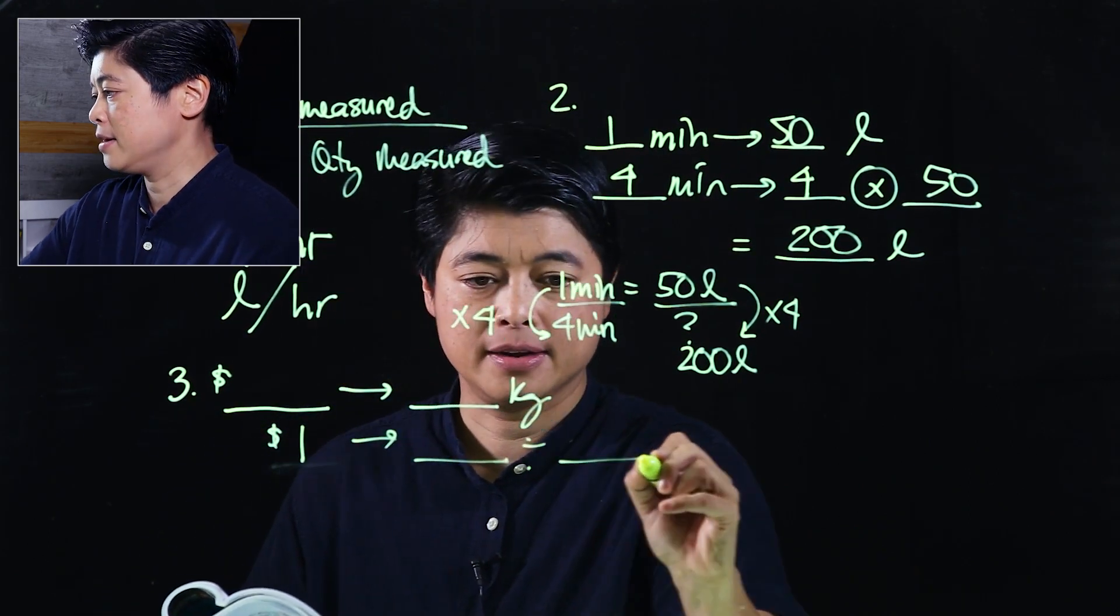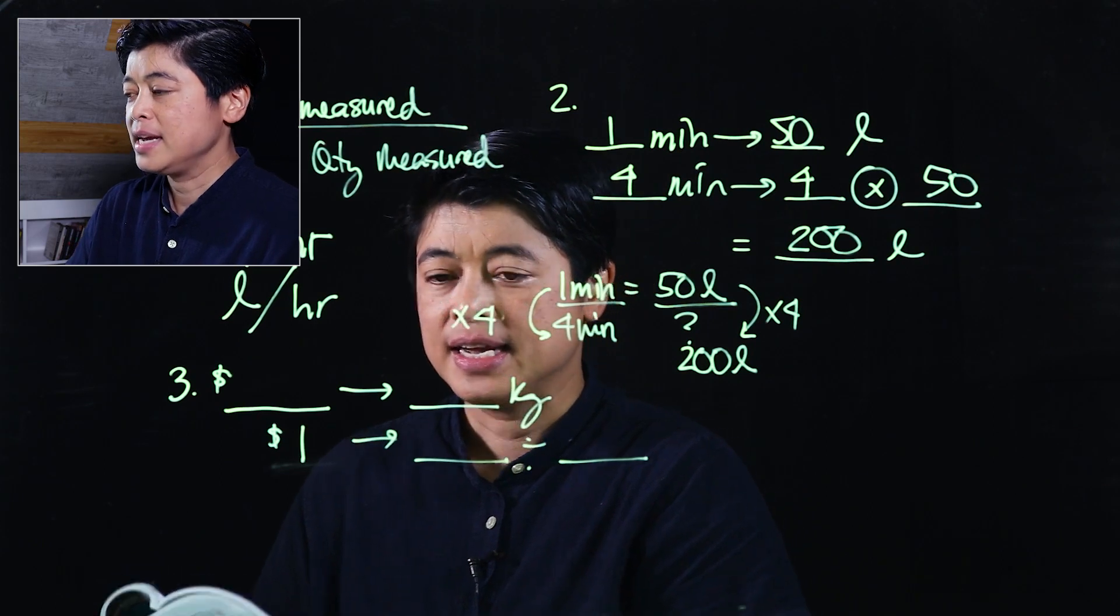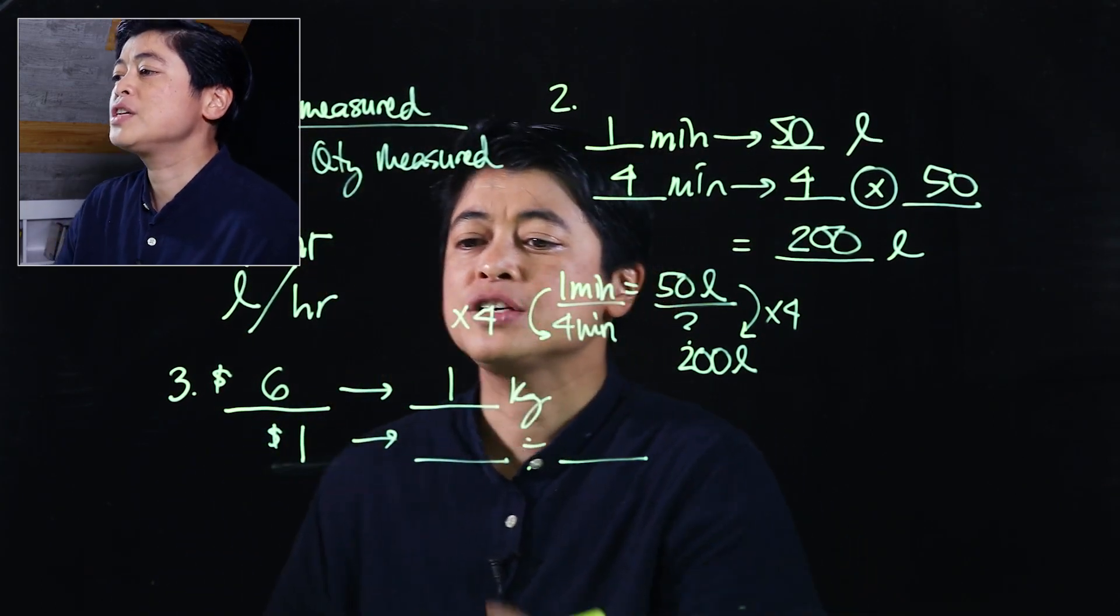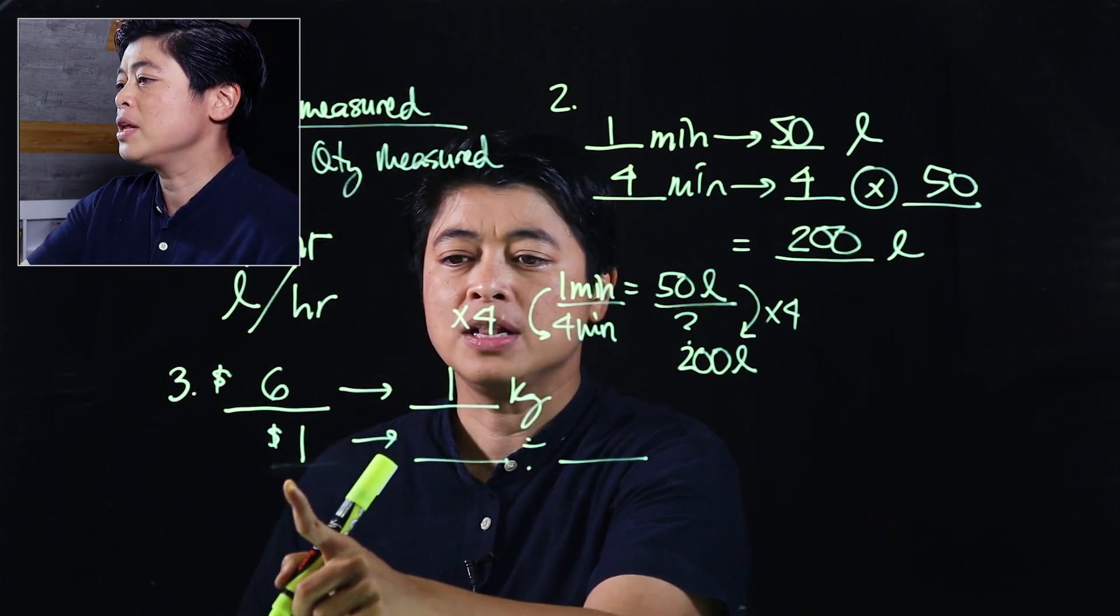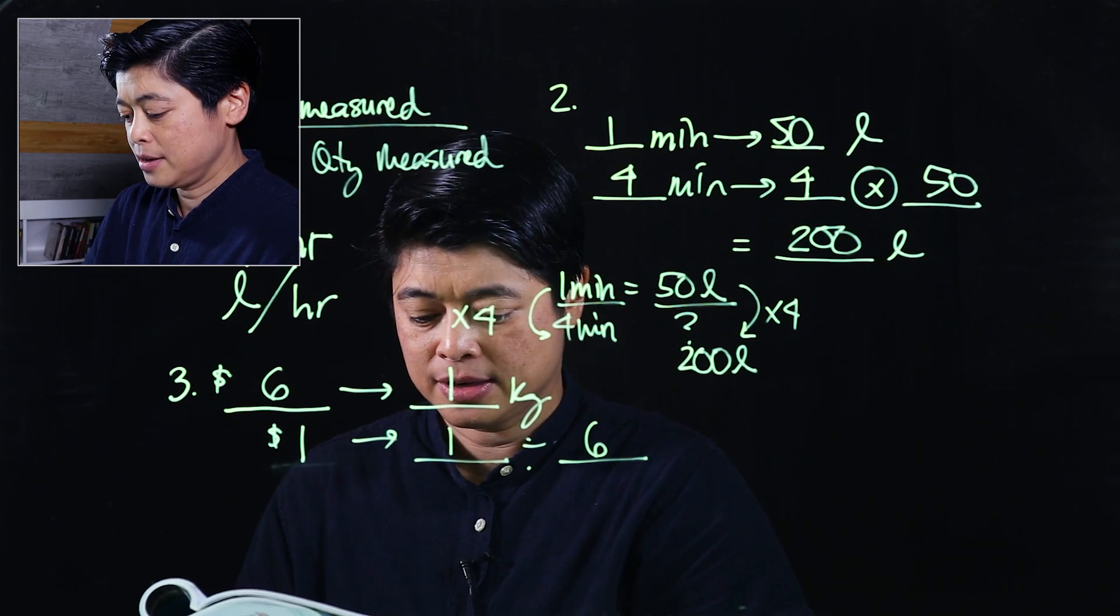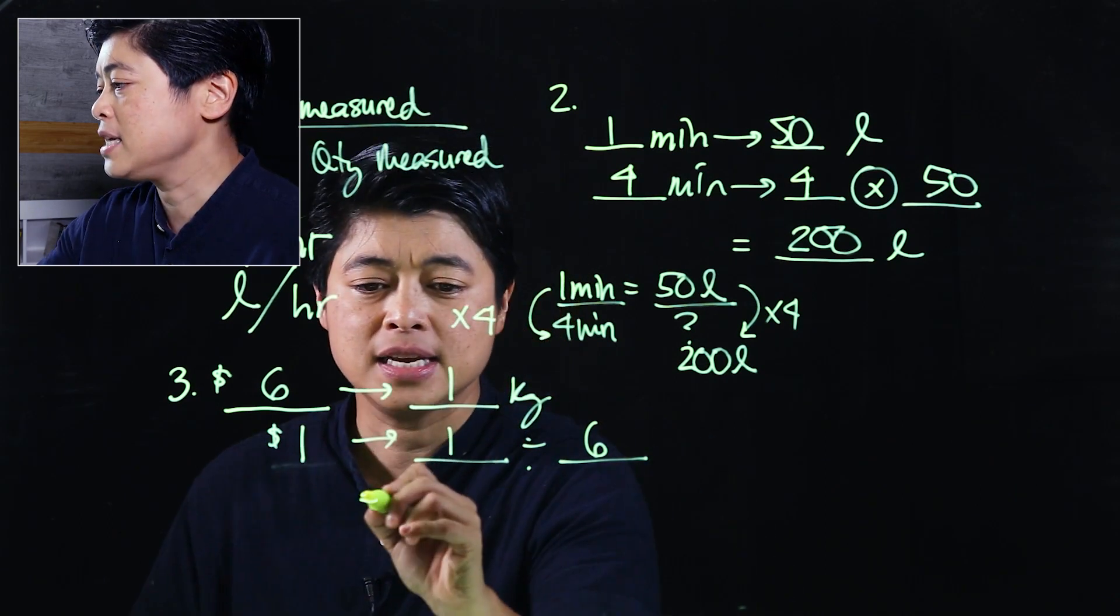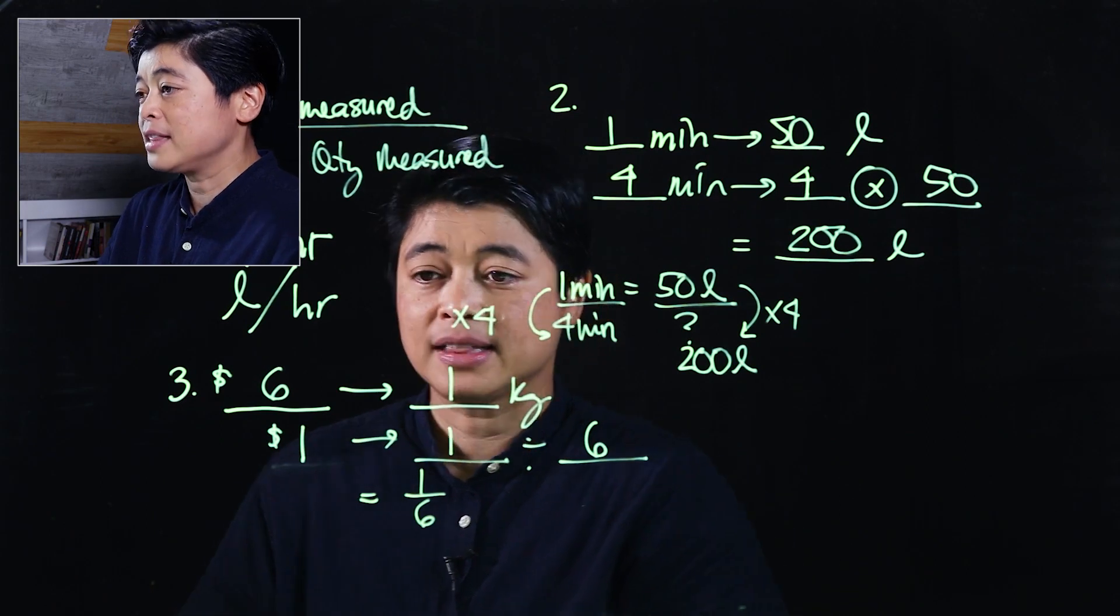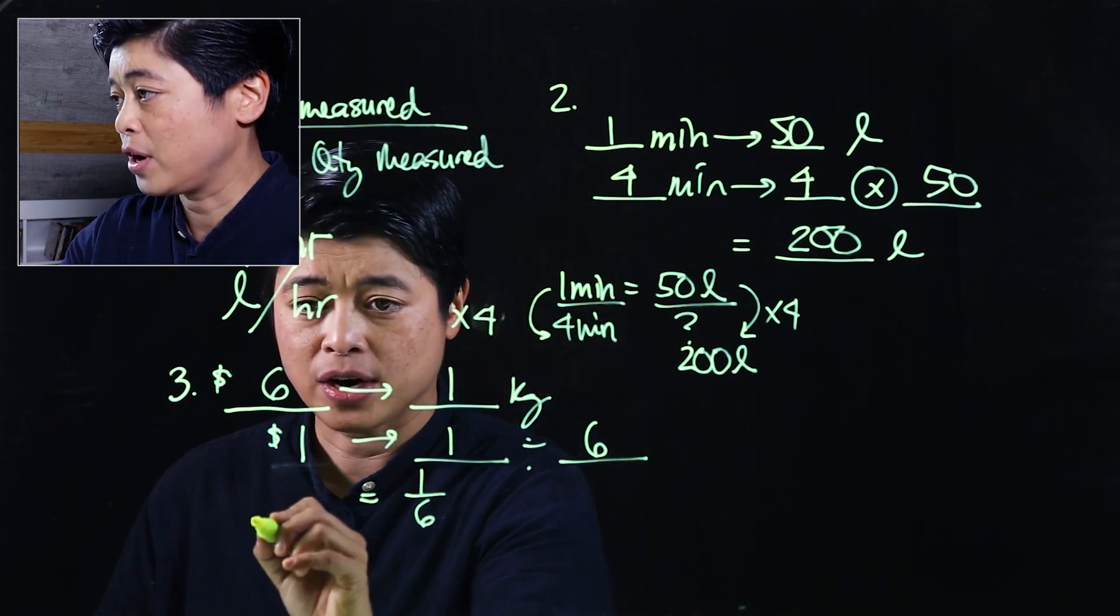Then blank. Oops, one dollar. Then it says it's six dollars for one kilogram, which means one dollar will be one divided by one divided by six. Then this is equal to one sixth.